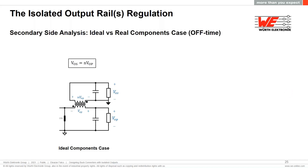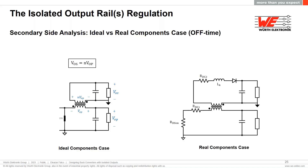Now we have seen how the secondary-side current shape changes with different parameters. Let's look into the isolated output voltage regulation. With ideal components, during the off-time of the control MOSFET the well-regulated output voltage of the buck converter appears across the primary winding and is reflected to the secondary winding scaled by the turns ratio. As the diode is forward-biased, this same voltage will also appear at the isolated output VOS. However, components are not ideal and parasitics will play an important role in degrading the isolated output voltage regulation.